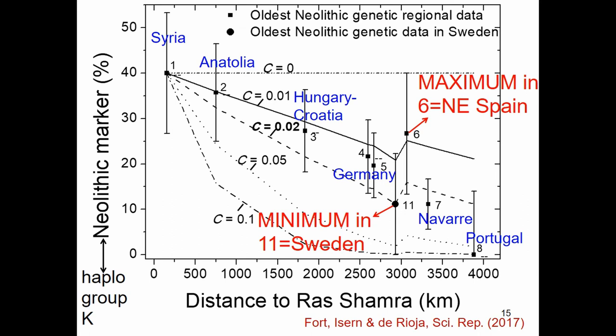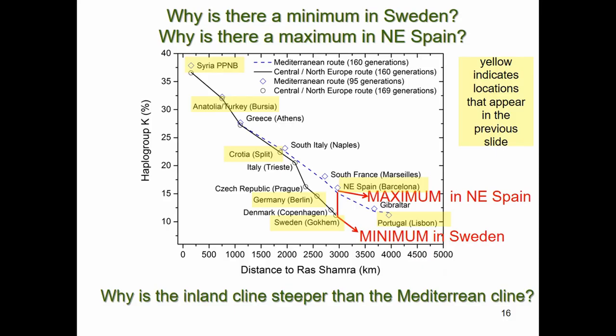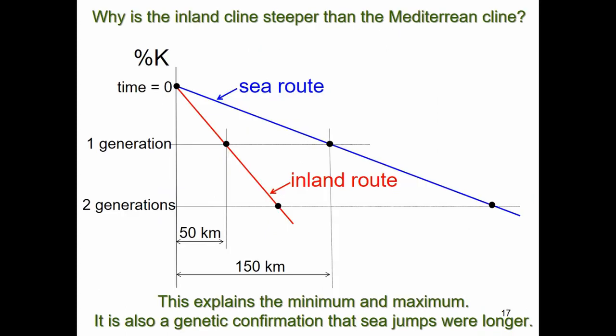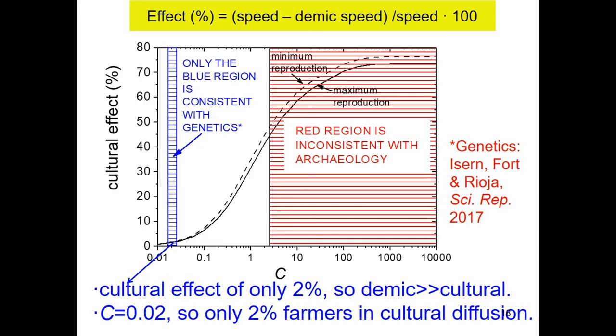Combining genetics with archaeology provides much more information than either alone. There is a minimum and a maximum in the curves: the minimum corresponds to the England route with a steeper genetic cline, because the distances between generations are longer. The yellow regions highlight the ranges from the previous archaeological analysis, and genetics narrows the estimate to c approximately 0.02.